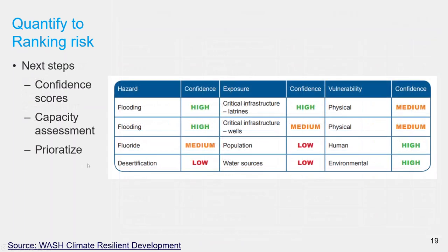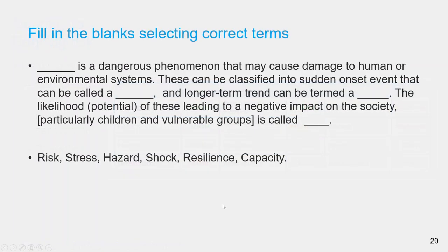After ranking and selecting a subset of the highest-ranking risks, the next steps are giving them a confidence score, assessing capacity against those risks, and then prioritizing them for addressing. These steps are beyond the scope of this introductory lesson — please refer to the WASH Climate Resilient Development document for those details. Here is a short exercise for you: please fill in the blanks on a piece of paper for now, and later you will be able to fill your answers in an online quiz.